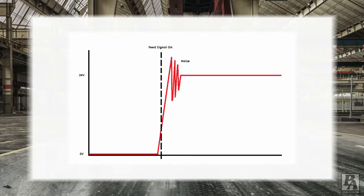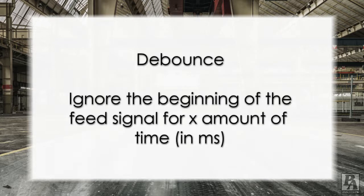If none of this has worked, the answer could be noise in the feed signal. If there is noise at the beginning of the feed signal, the control could mistake the feed signal turning on and off and register it as a sink fault. This can be fixed with the debounce parameter. Debounce tells the control to ignore the feed signal for a set amount of time, in order to avoid the issue caused by noise at the beginning of the signal. Debounce should not be set too high either, or the feed signal could be ignored for too long, which could actually cause a sink fault. For the best results, debounce is typically set to around 10 milliseconds.